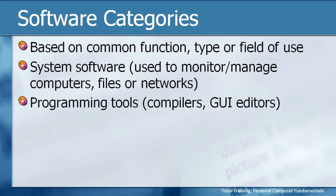Beyond what we'll discuss in detail are programming tools — things you actually use to write computer programs. Visual Basic, C#, JavaScript, and even HTML are all different programming languages. You also have compilers, which take all the written instructions and put them together into a program that will run, and a GUI editor — a graphical user interface editor. Just know that for everything you see on your computer, somebody originally had to program it using software tools.